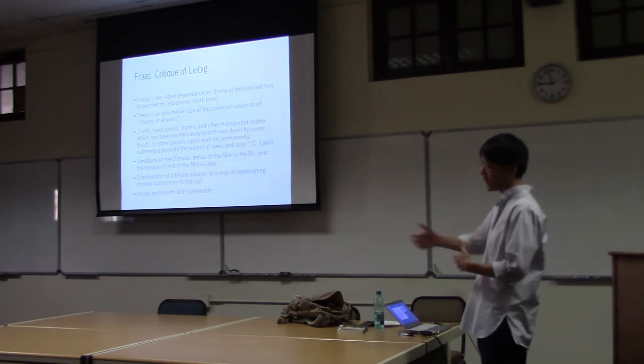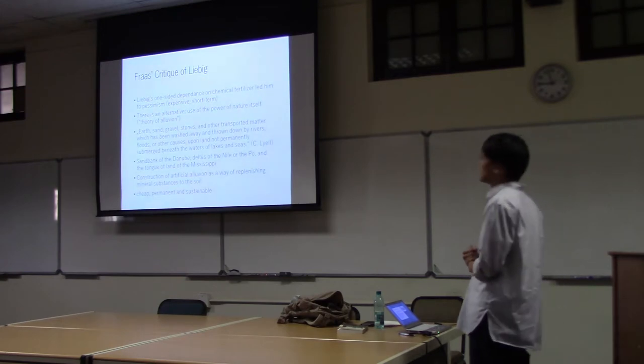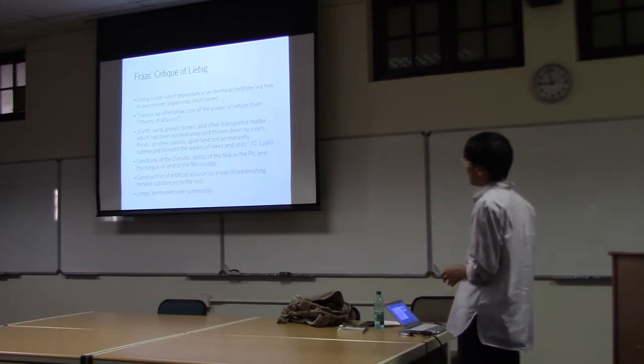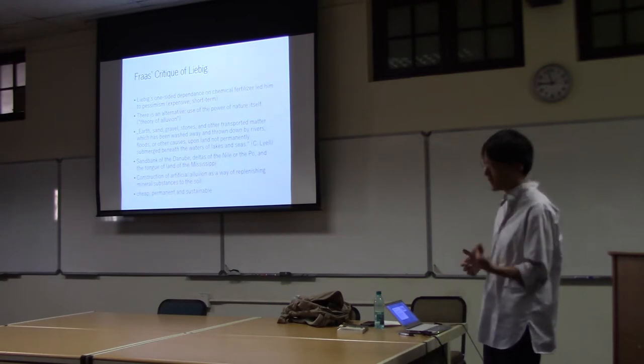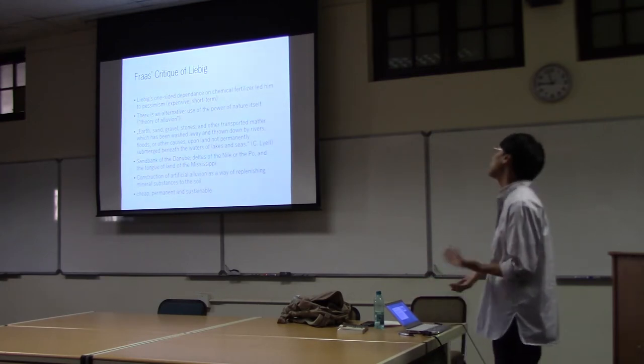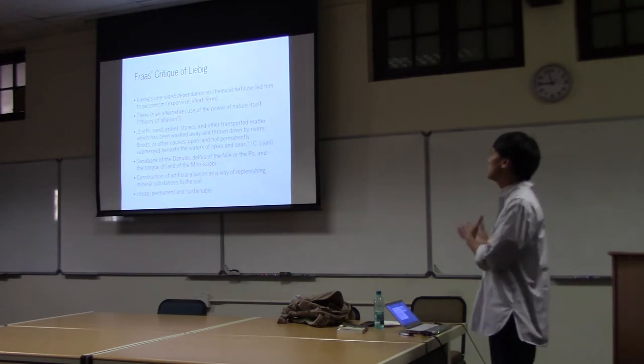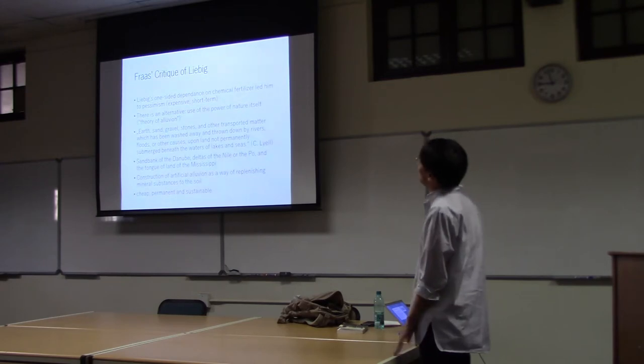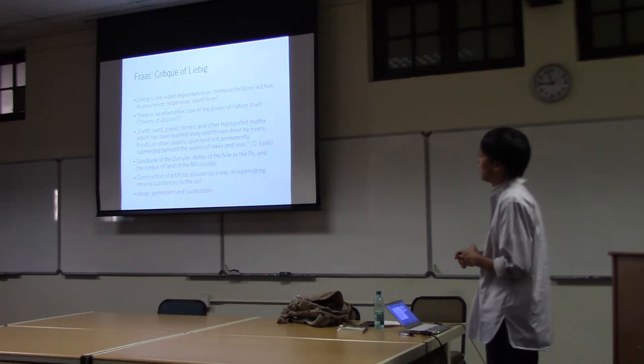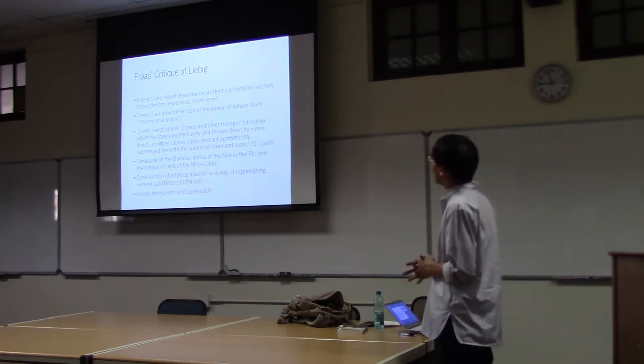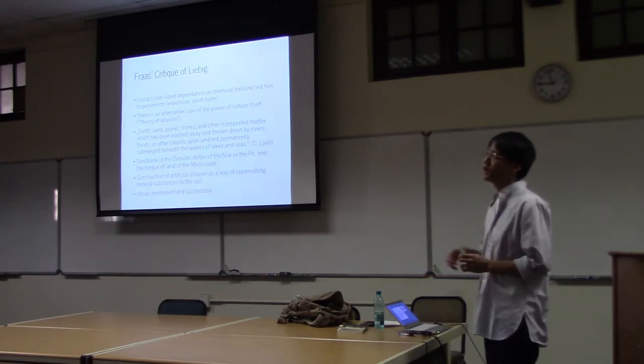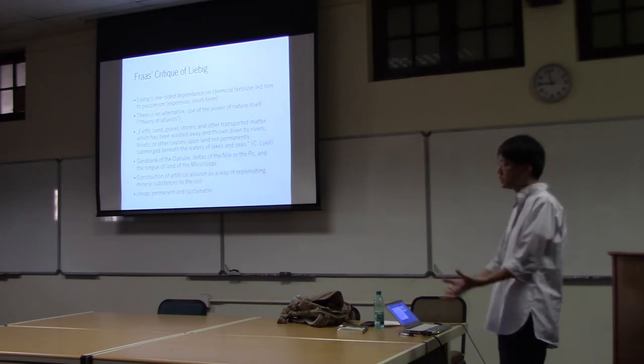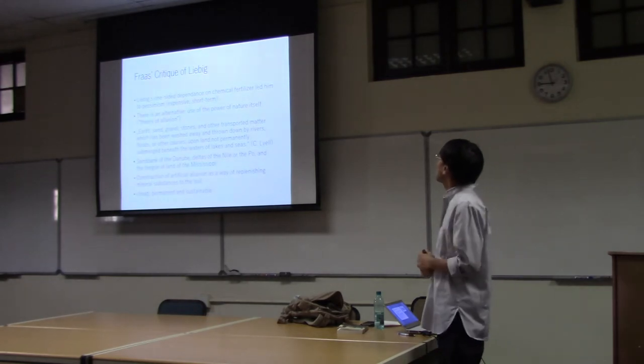As we saw yesterday, Marx tried to use Liebig to criticize Malthus, but actually Liebig is quite close to Malthus sometimes. Fraas is basically criticizing why was Liebig so pessimistic? In the 50s Liebig was very optimistic and became all of a sudden very pessimistic in 1862. Fraas says it's because Liebig was so one-sidedly dependent on chemical fertilizer. But chemical fertilizer is very expensive and has short-term effect, so it didn't work very well at the time. If chemical fertilizer doesn't function as a solution, Liebig thinks there's no solution, we will be dead because of soil exhaustion. But Fraas thinks there's another way of sustaining more sustainable ecology, and that's the theory of alluvium.